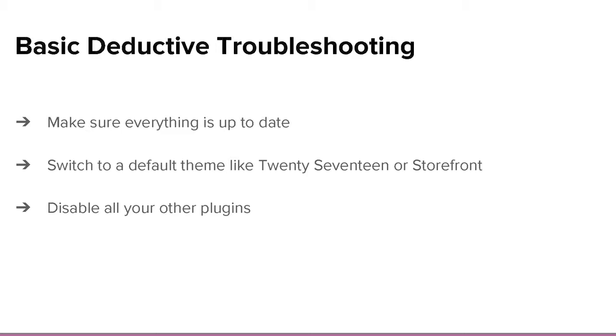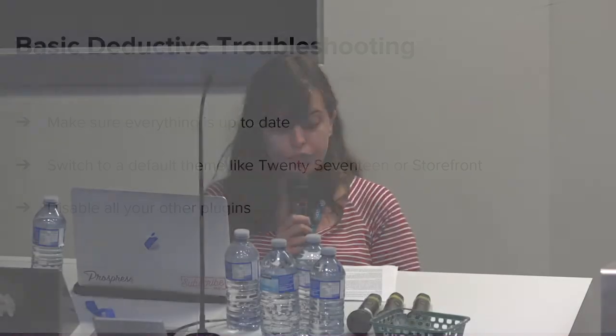The next step is switching to a default theme like Twenty Seventeen or Storefront to see if it's a theme conflict. I commonly see this when someone says something is broken on the front end — have you tried turning off the theme? The theme controls how the front end of your site looks. Some themes also include WooCommerce layout-specific stuff, so if you're having a cart issue, the theme is a good place to check.